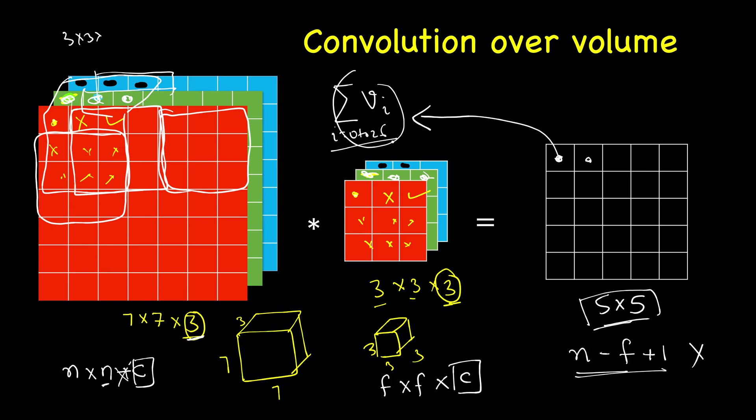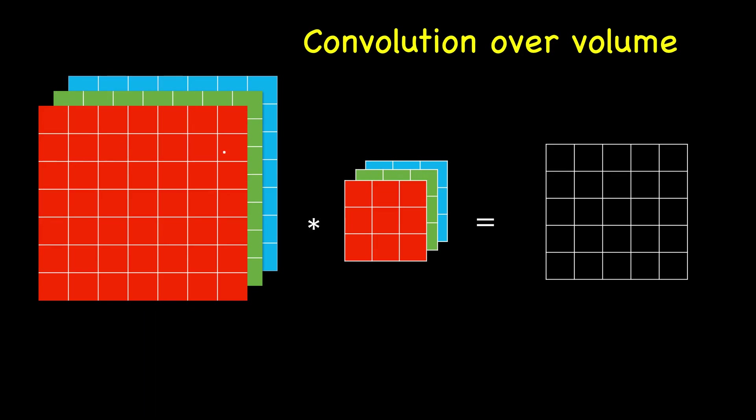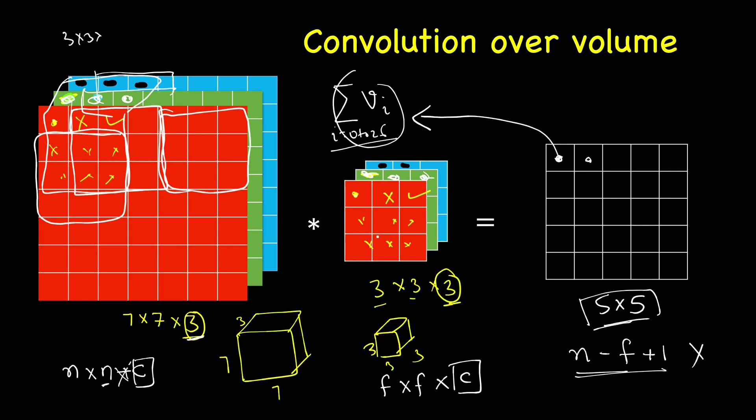Now, there is one more thing to it. This is the basis of how we perform convolution. Then we can have multiple such filters. In our earlier example, we saw just one filter. Maybe this filter was detecting horizontal edges or vertical edges.